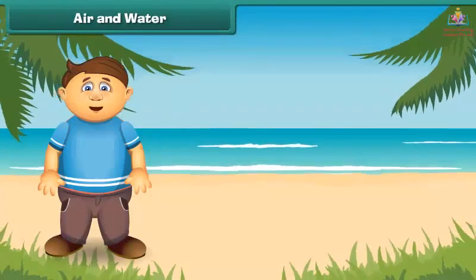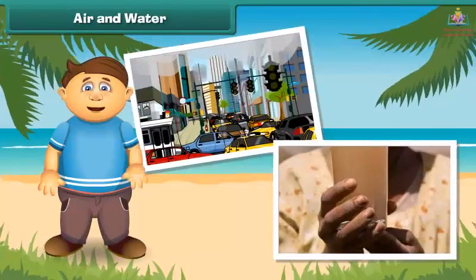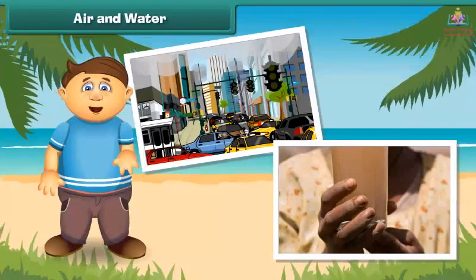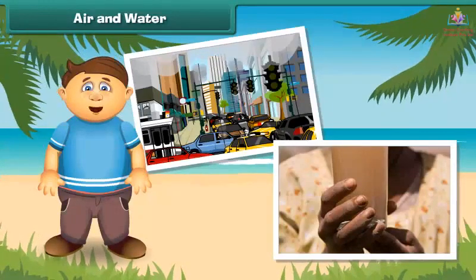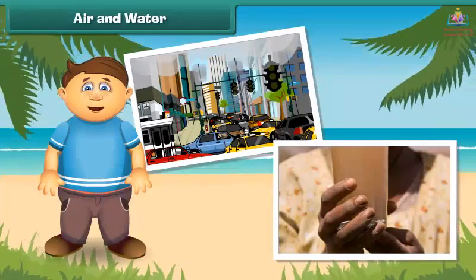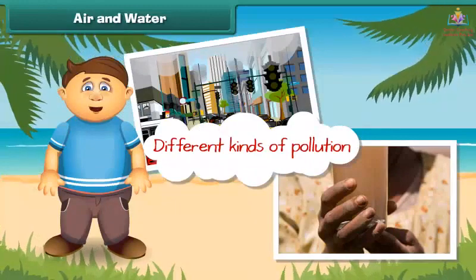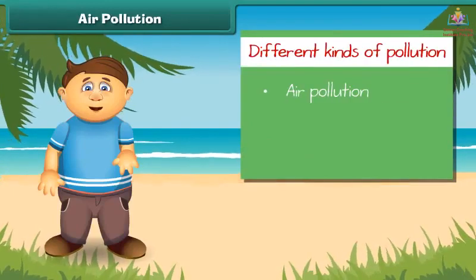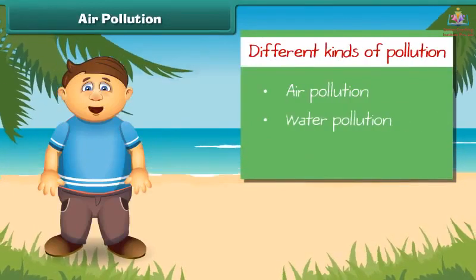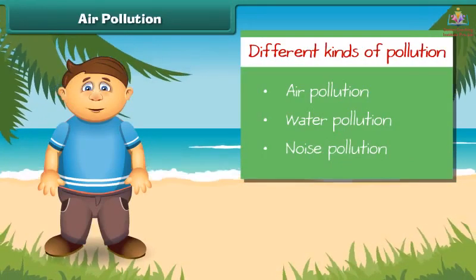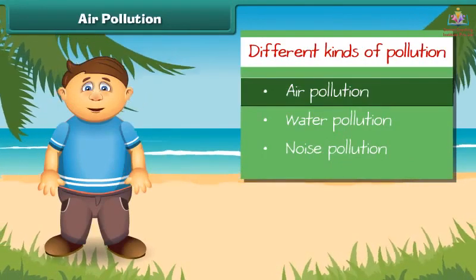As we all know, air and water mainly support life on the earth. But now these two are getting dirty day by day. As a result, there is no fresh air to breathe and clean water to drink. So let us discuss in detail different kinds of pollution. Pollution is mainly of three types: air pollution, water pollution, and noise pollution. First, let's know about air pollution in detail.